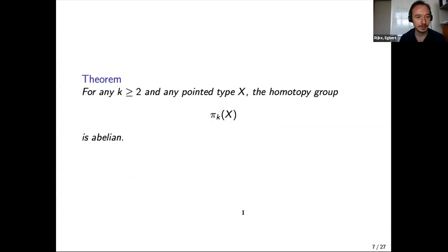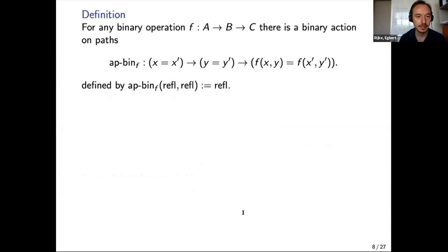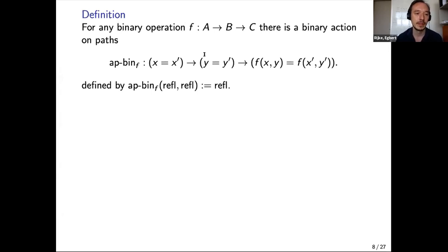Something very special holds for k ≥ 2: all homotopy groups are going to be abelian. To show this I'm going to introduce a second concatenation operation on paths that acts on paths of level two and up. To get this I need the binary action on paths of a binary operation f.